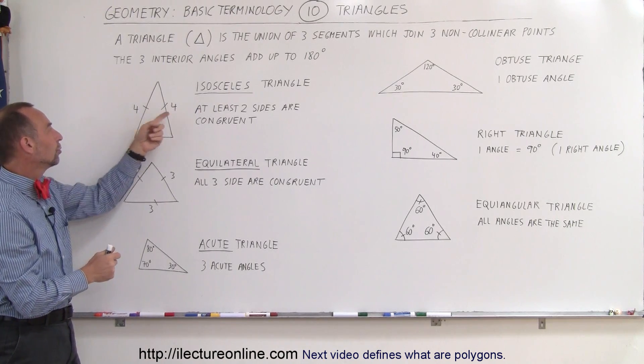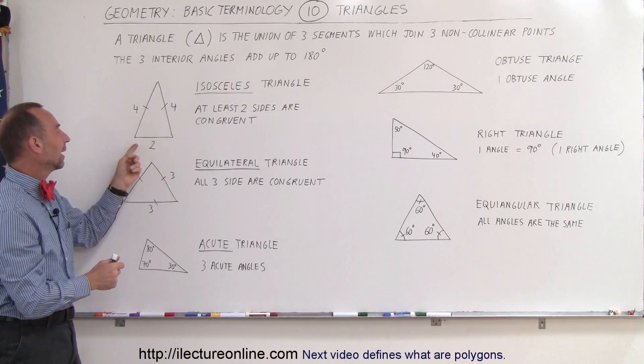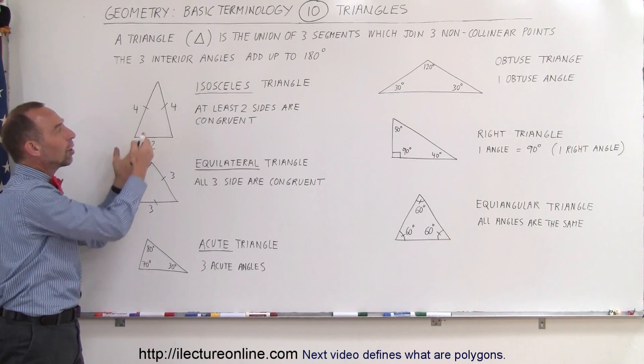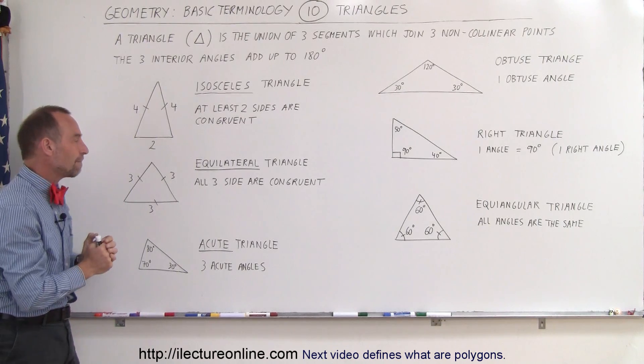So here we have an example where two of the sides have a measure of four and then here is the base of the triangle with a measure of two. But since those two are the same, we call it an isosceles triangle. The two legs are the same.